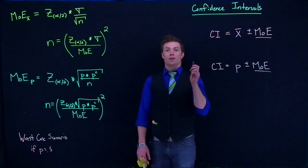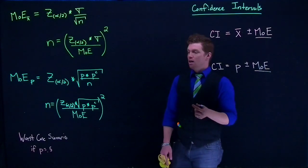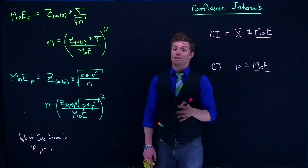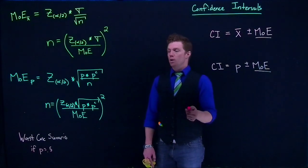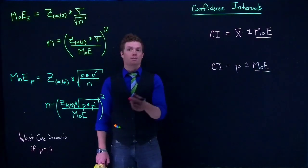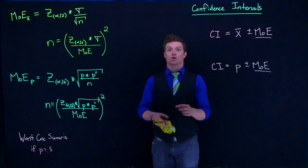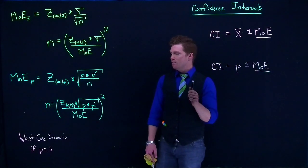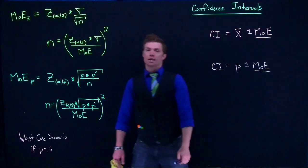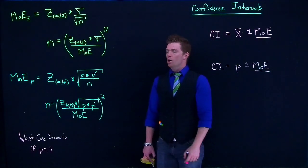There is one other caveat: occasionally we have a rough idea of what the proportions are supposed to be. Maybe we think it's going to be 10% from a previous study — if so, we don't have to assume worst case scenario. We can put 10% and 0.9 in and calculate it out, which can make the sample size a little smaller. To reiterate: if we have any idea of what the proportions will be, we can use those; if not, we assume worst case scenario. We'll do an example later on of how to actually apply these equations.